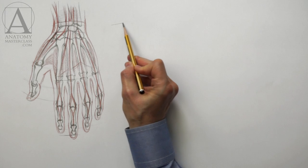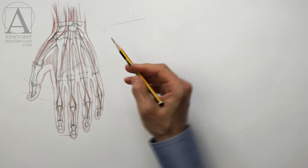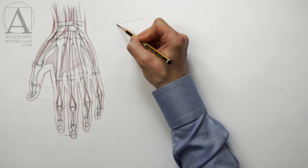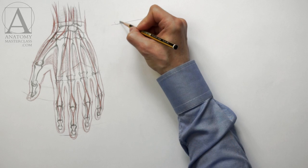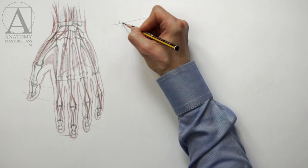In this video section, you will discover the lower arm and hand anatomy. I will make a drawing of the lower arm and hand in the pronation position. This position is when the palm of the hand is facing downward.